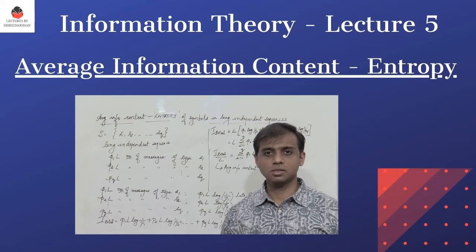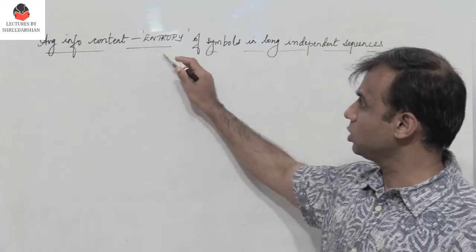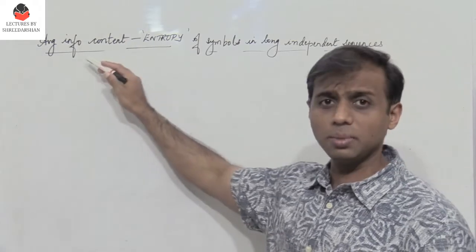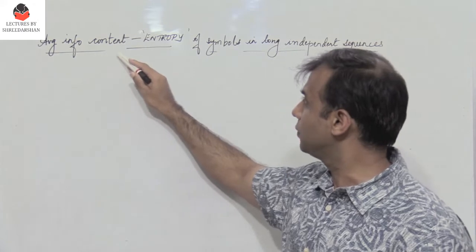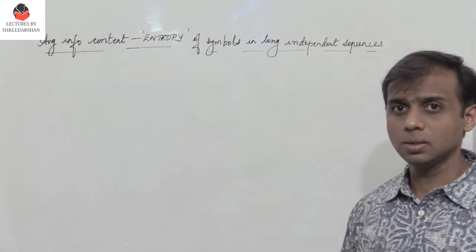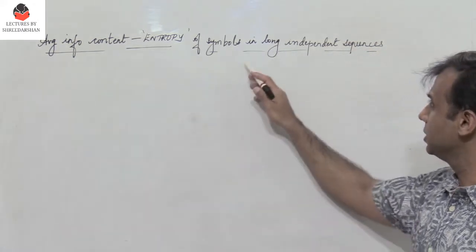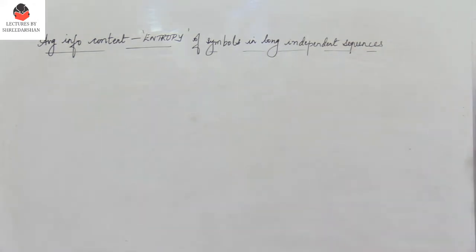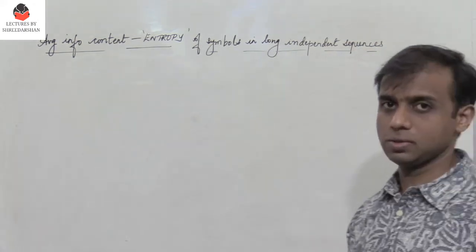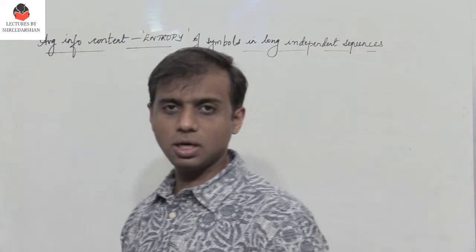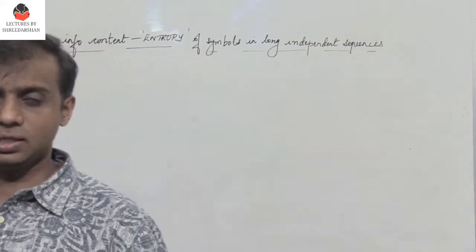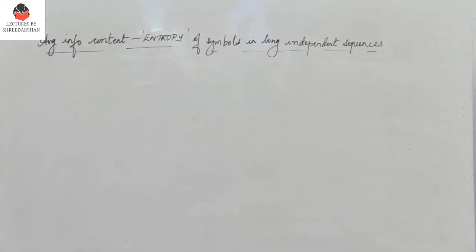How do we get the expression of entropy, which is nothing but the average information content of symbols in long independent sequences? Let us see how we can find the expression of entropy.